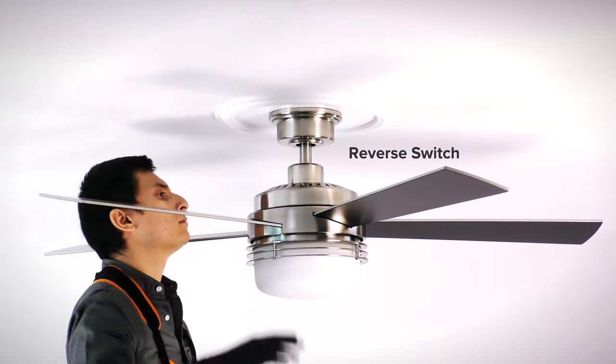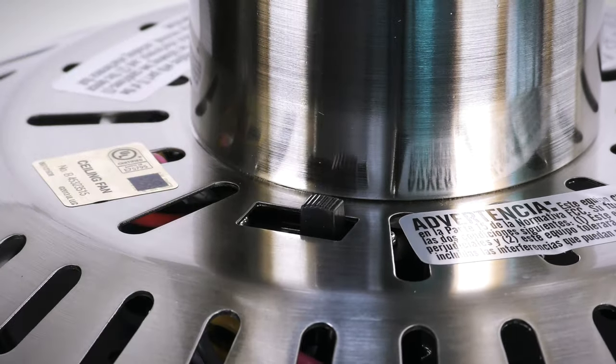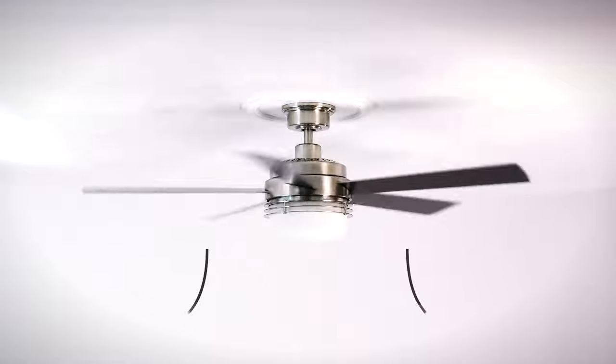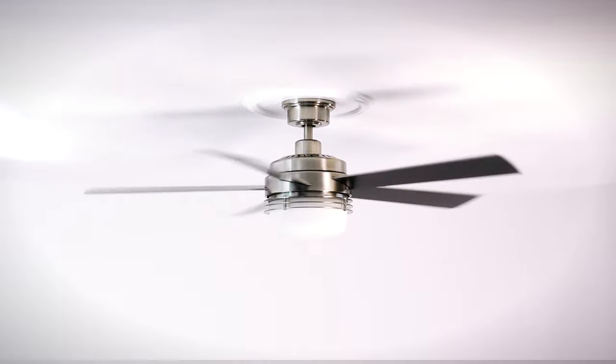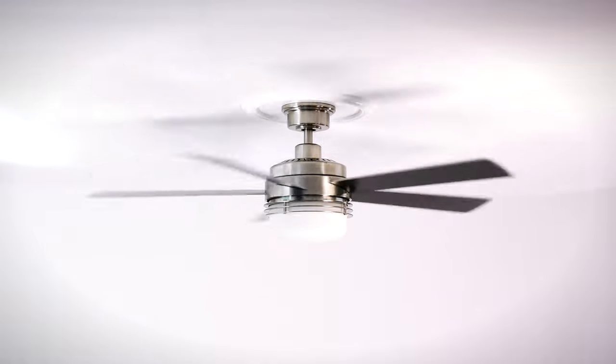With the fan off, use the reverse switch on top of the motor to change the direction of the fan rotation. For warm weather, the fan will spin counterclockwise to push air downward and produce a cooling effect. For cool weather, the fan will spin clockwise to cycle warm air off the ceiling.